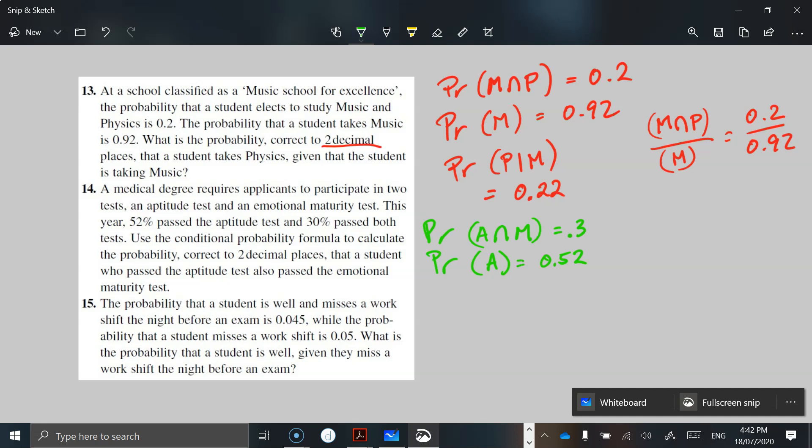So use the conditional probability formula to calculate the probability correct to two decimal places that a student who passed the aptitude test also passed the emotional maturity test. So there's a given circumstance here. Hold on, sorry, not M, make it an E.